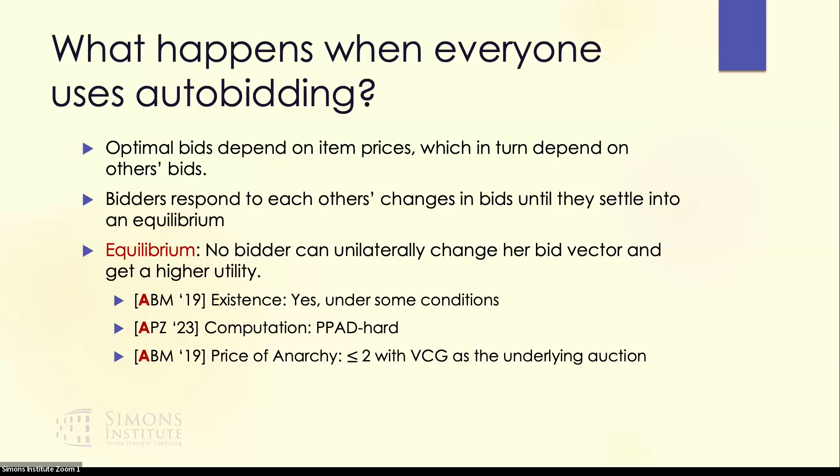The equilibrium can be pretty hard to compute. We then look at how good the equilibrium is in terms of welfare or efficiency — that is, how does the welfare at equilibrium compare to the best possible welfare when agents are not even strategic? This is called the price of anarchy. In this setting, even the definition of efficiency is interesting because bidders have cost constraints, so you can't just take their value as such to compute efficiency, but you can define a reasonable notion. For that, you can show that the price of anarchy is two if the underlying auction being used is VCG. Other papers bound the price of anarchy when the underlying auction is something else.